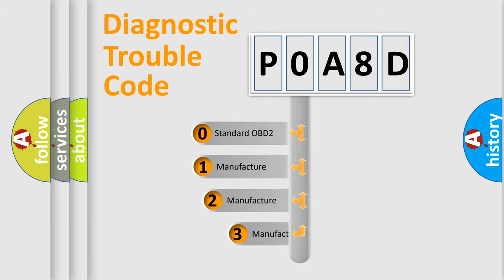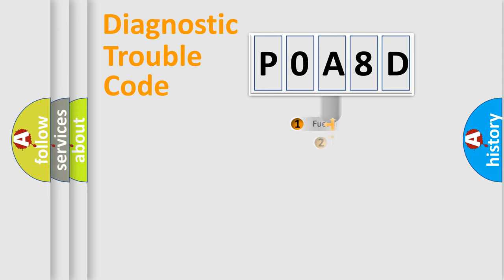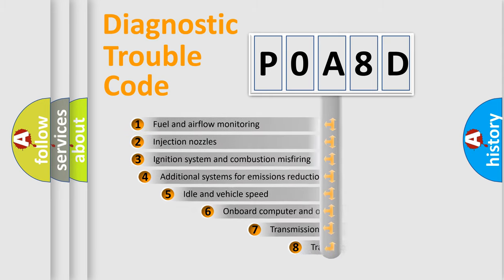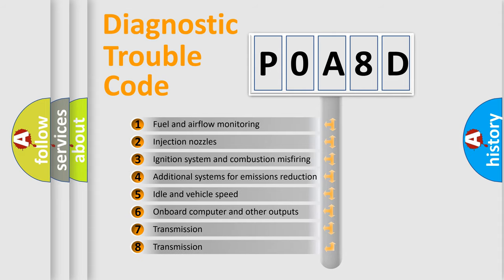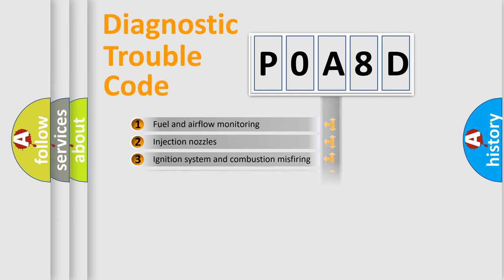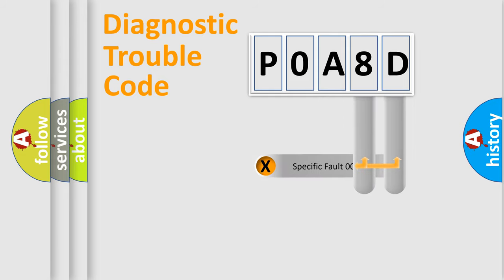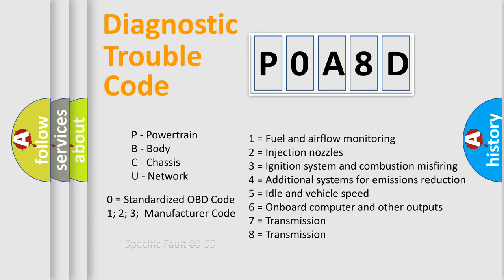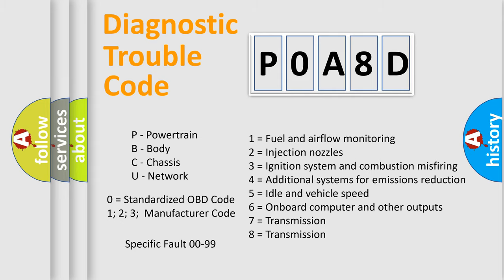If the second character is expressed as zero, it is a standardized error. In the case of numbers 1, 2, or 3, it is a car-specific error. The third character specifies a subset of errors. The distribution shown is valid only for the standardized DTC code. Only the last two characters define the specific fault of the group. Let's not forget that such a division is valid only if the second character code is expressed by the number zero.